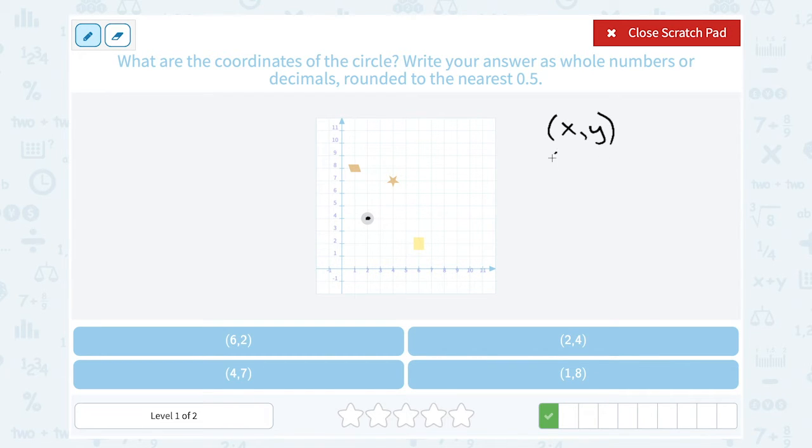Remember, x is how far we're going to move left or right. So counting from my origin, it looks like it's 1, 2 to the right. Notice it's directly above the 2. So that means my first coordinate is 2.